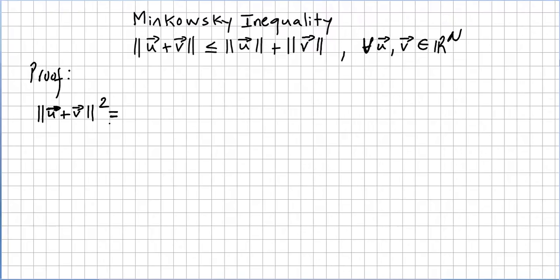And that's nothing else but the internal product (u+v)·(u+v), and so this will be u·u plus 2 times u·v